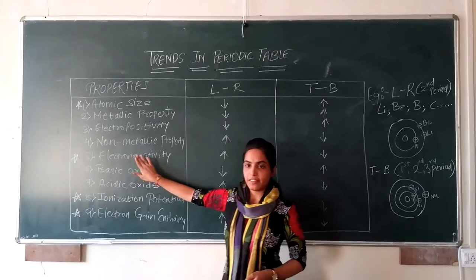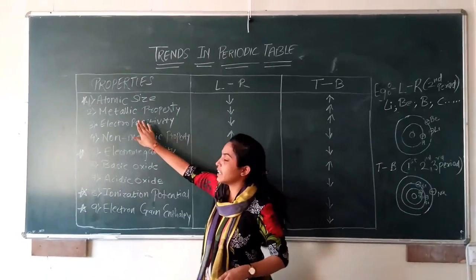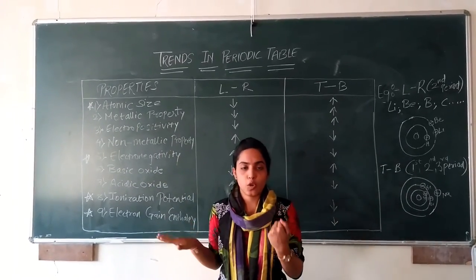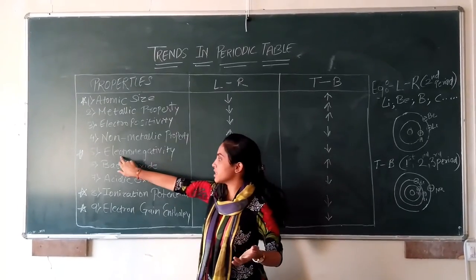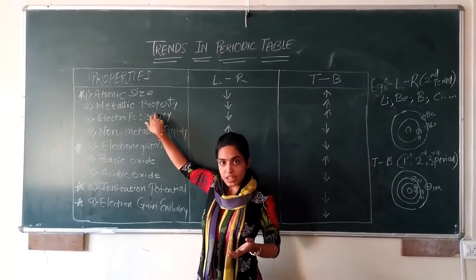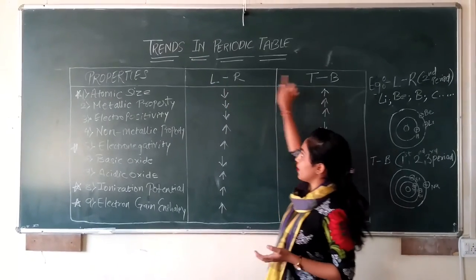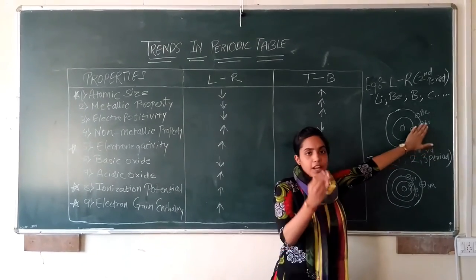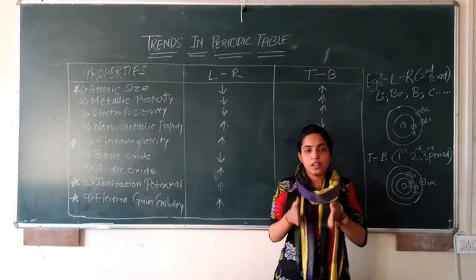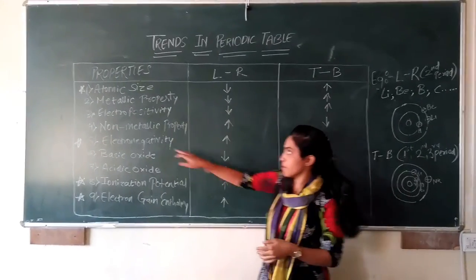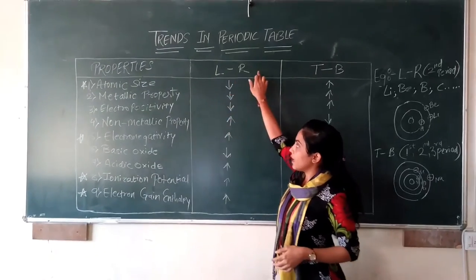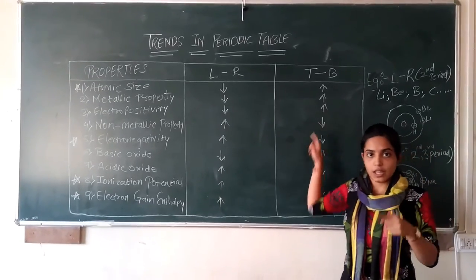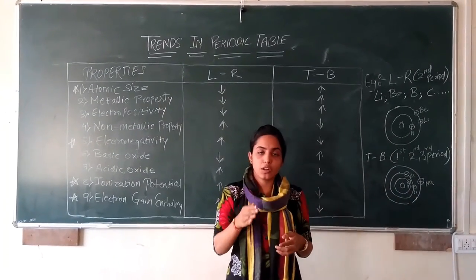Next, we have seen electronegativity. The opposite of electronegativity is electropositivity. The electron-positive tendency decreases from left to right. But from top to bottom, electropositivity increases, because the number of shells increases and electrons are further from the nucleus.